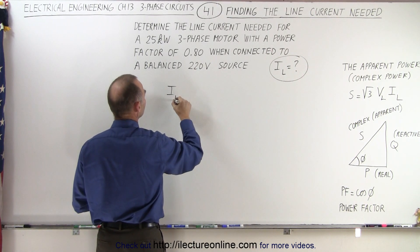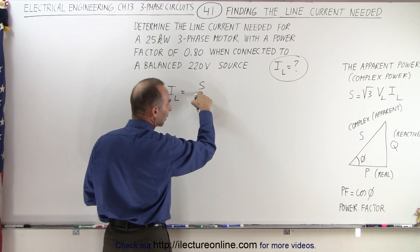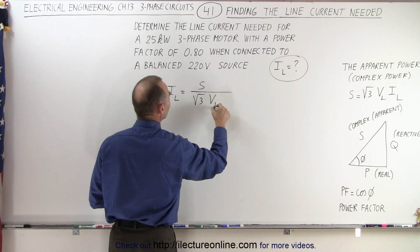I_L is equal to the complex or apparent power divided by the square root of three times the line voltage.